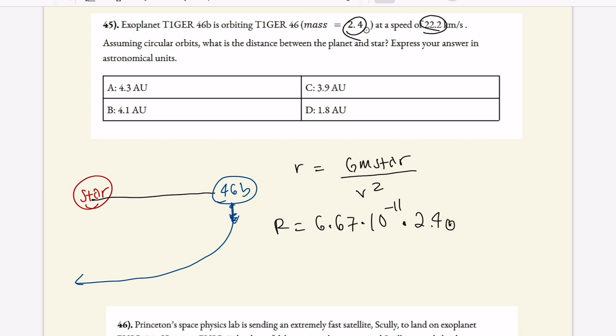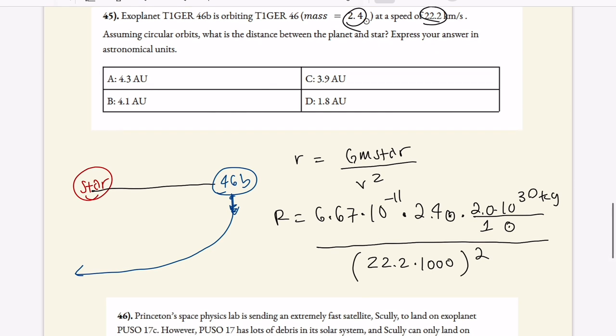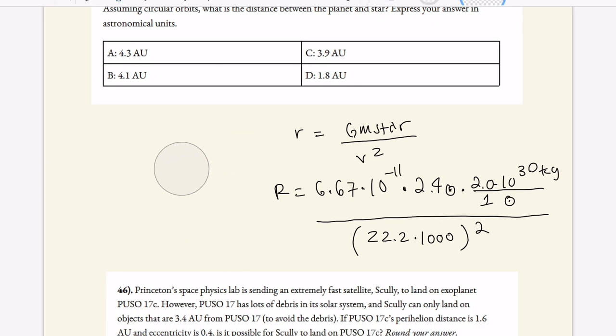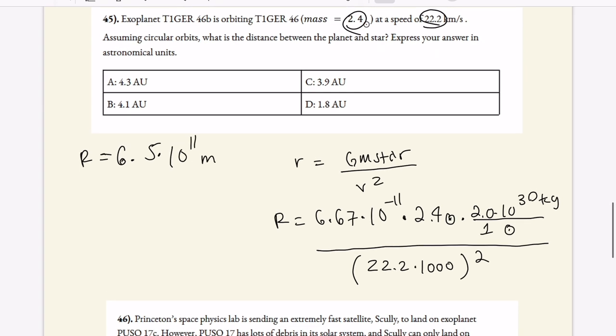Then r is equal to G times m star, which is 2.4 solar masses, and in 2.4 solar masses you have 2.0 times 10 to the 30th kilograms per solar mass. That is a constant you guys should know. And then we're going to divide that by v squared, which is 22.2 times 1,000. This is converting from kilometers per second to meters per second because our formula is given in SI units, and then we're going to square it.